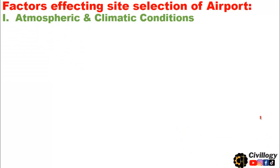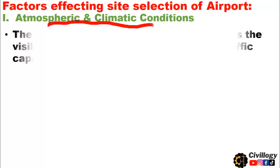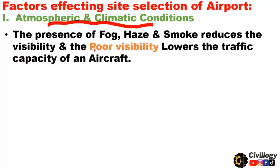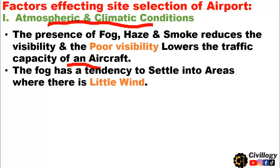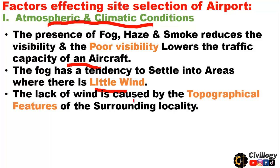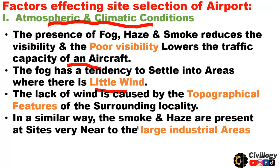The first point which affects the site selection of an airport is atmospheric and climatic conditions. The presence of fog, haze, and smoke reduces visibility, and poor visibility lowers the traffic capacity of aircraft. Fog has a tendency to settle into areas where there is little wind, caused by the topographical features of the surrounding locality. Similarly, smoke and haze are present at sites near large industrial areas, so such areas should be avoided as much as possible.